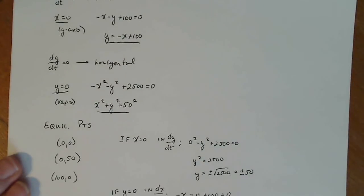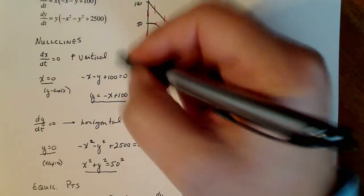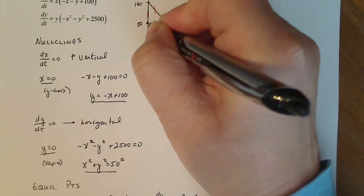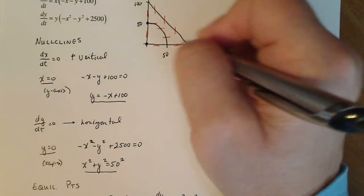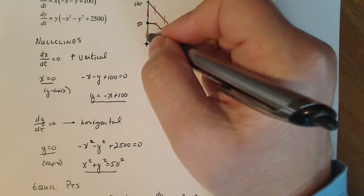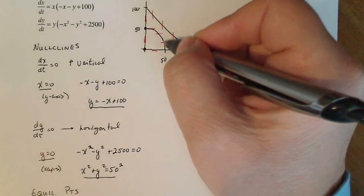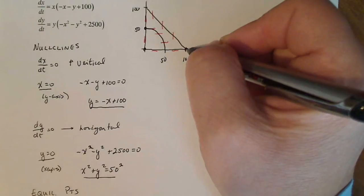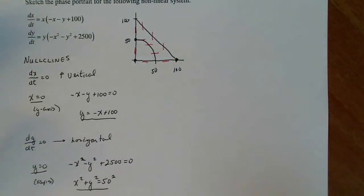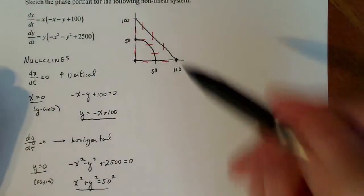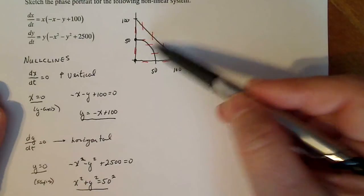So those are all the equilibrium points: (0,0), (0,50), and (100,0). We know that between equilibrium points the direction of arrows stays the same, but may change as we pass one. To determine directions, I need to pick test points — one along the slanted line, one on the circle, one along the x-axis, one along the y-axis below (0,50), and one above. That's five ordered pairs to plug into dx/dt and dy/dt to determine their signs.